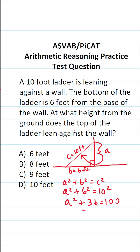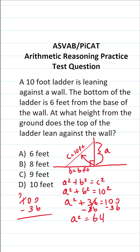Let's subtract 36 from both sides. This says A squared is equal to 100 minus 36. I know it's 64, but if you can't do 100 minus 36 mentally, let's work it off to the side. 0 minus 6 we can't do, so we borrow: this becomes 0, this becomes 10, this becomes 9, this becomes 10. 10 minus 6 is 4, and 9 minus 3 is 6. To get A by itself, we take the square root of both sides. This says A equals the square root of 64, or 8.